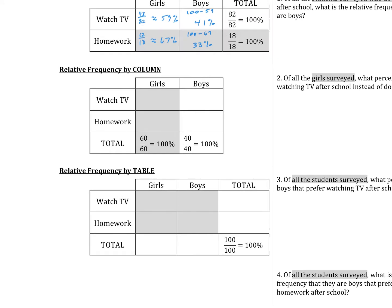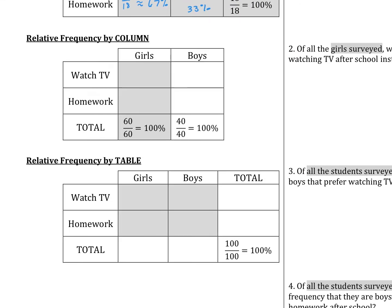We have two other tables. With by column, you split it up between boys and girls, and within girls you compare TV to homework, and within boys you compare TV to homework. The last table is relative frequency by table — by total. For this one, you're comparing a combination of those. Pause the video and fill out those two tables.